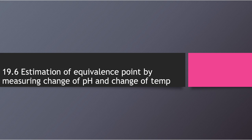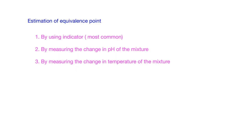This video we're going to talk about finding the equivalence point by measuring change of pH and change of temperature. In the previous video we talked about using an indicator to locate the equivalence point. This video we're going to talk about how changing pH of the mixture and also changing temperature can also indicate the equivalence point.